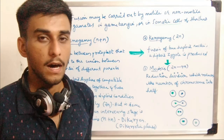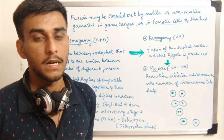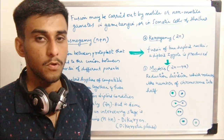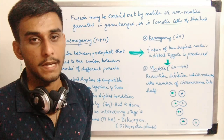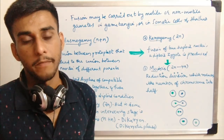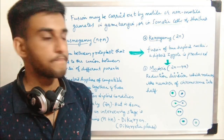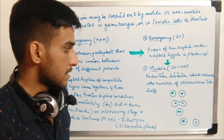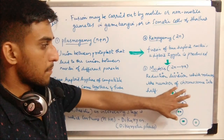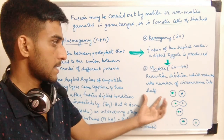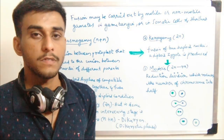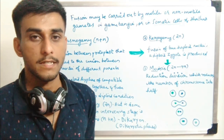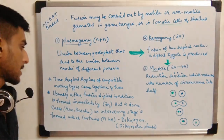After fusion, the diploid nucleus formed undergoes meiotic division, forming haploid nuclei. Reductional division reduces the number of chromosomes to half. This is the entire process belonging to sexual reproduction.